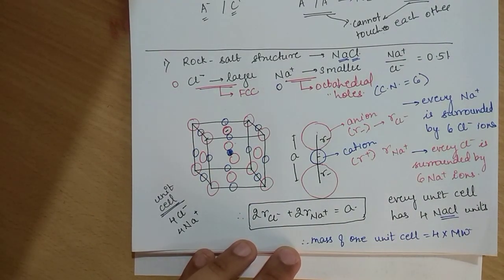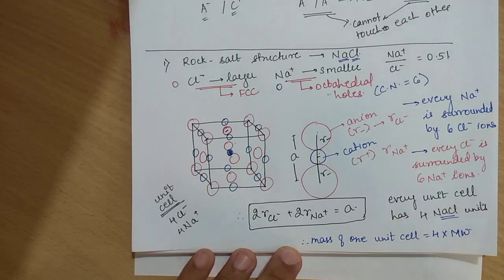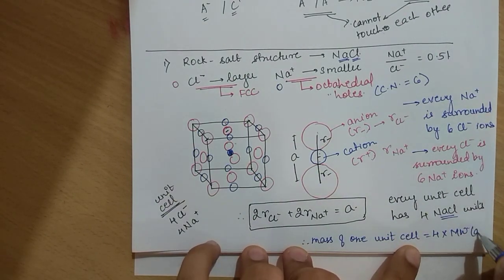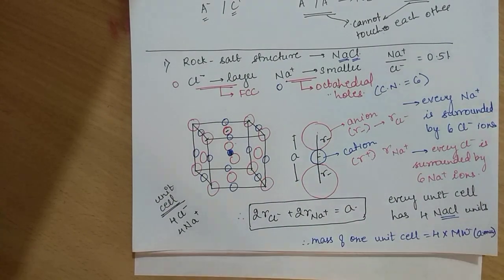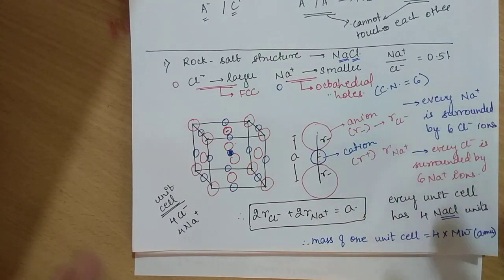Therefore, every unit cell has 4 NaCl units. So the mass of 1 unit cell is equal to 4 times the molecular weight of NaCl. The molecular weight of NaCl is 58.5, so 4 × 58.5 gives you the mass of 1 unit cell. I hope the NaCl structure is now clear — it is very important that you remember and understand this structure.